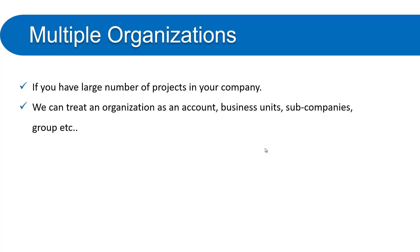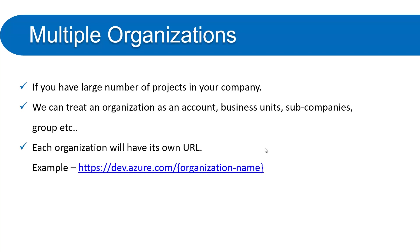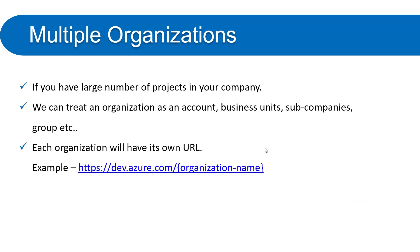For example, you can create an organization for each business unit running in your company, for sub-companies, or for groups. Each organization will have its own URL in the format dev.azure.com/your-organization-name. The organization name must be unique because it is part of the URL.